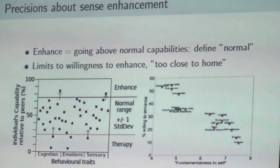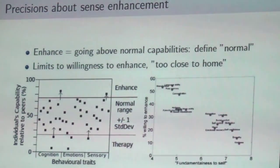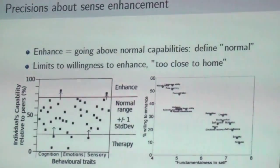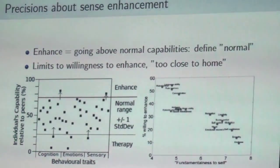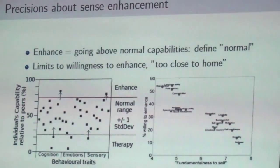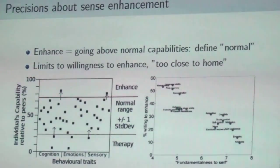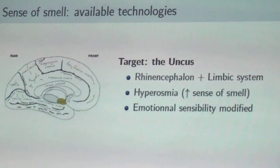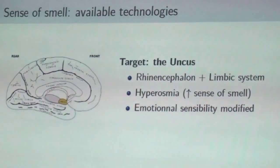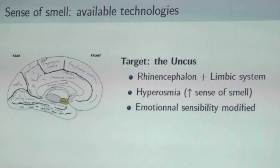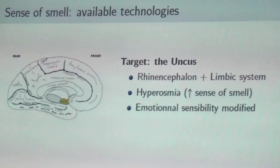There are psychological limits to enhancement. When enhancing a trait not fundamental to the self — like attention or basic memory — almost 50% of people are willing to accept it. But when talking about fundamental traits like empathy or kindness, the percentage of approval plummets. For enhancing the sense of smell: dogs have a very good nose, and to get that we need to stimulate one part of the brain — the uncus, part of the limbic system — which could give a tremendous sense of smell, but will also modify emotional sensibility.